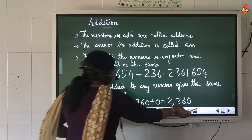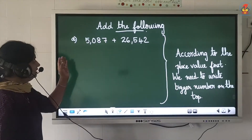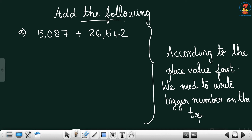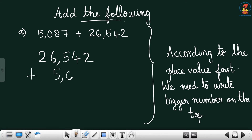Then we will go for problems. Add the following. The first problem is 5,087 plus 26,542. Which number is bigger here according to the place value? 26,542 is bigger. We need to write 26,542 first on top, then 5,087 below. We always write the bigger number on the top.